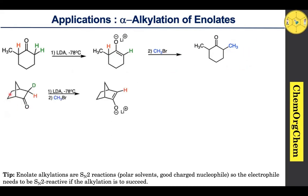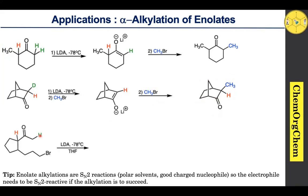Now look at this example: a bicyclic ketone having endo and exo faces. The endo face is sterically more crowded than the exo face. Therefore when LDA is used, it takes the proton from the exo face — here you see the exo face has a deuterium atom. Therefore LDA abstracts the deuterium in this particular example, generating the corresponding enolate ion, which then reacts with methyl bromide by SN2 to yield the corresponding alkylated product. Not only intermolecular reactions, but even intramolecular reactions are also promoted by LDA.